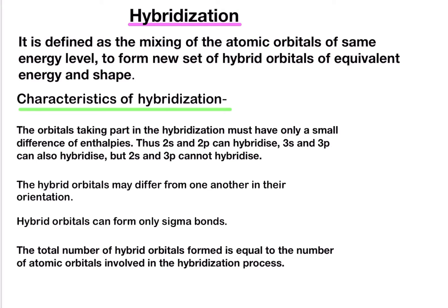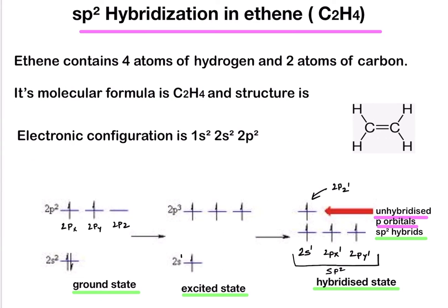Now let's proceed to sp2 hybridization in ethene, C2H4. Ethene contains 4 atoms of hydrogen and 2 atoms of carbon. Its molecular formula is C2H4. The structure has a C=C double bond and four single bonds between hydrogen and carbon.